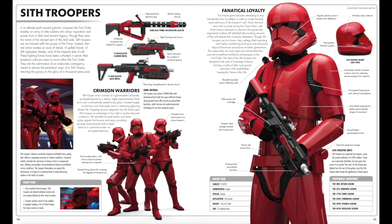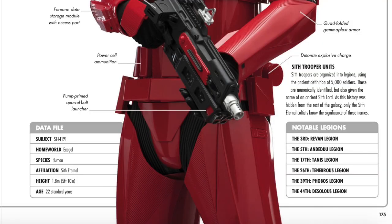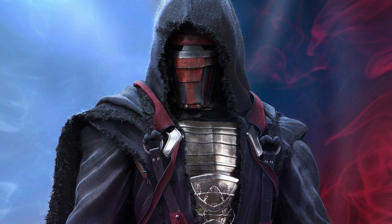And what I'd like to do is read and show you that excerpt from the Sith Troopers portion of the visual dictionary. This is from the Rise of Skywalker Visual Dictionary by Pablo Hidalgo. 'Sith Troopers are organized into legions using the ancient definition of 5,000 soldiers. These are numerically identified, but also given the names of ancient Sith Lords. As this history was hidden from the rest of the galaxy, only the Sith Eternal Cultists know the significance of these names.' And the very first one in the notable legions is the third: Revan Legion. So there we have it — Darth Revan is officially canon, and we can see that through these Sith Troopers.